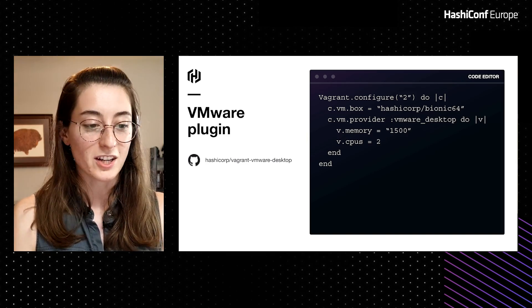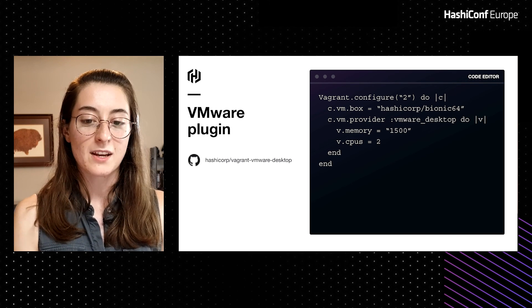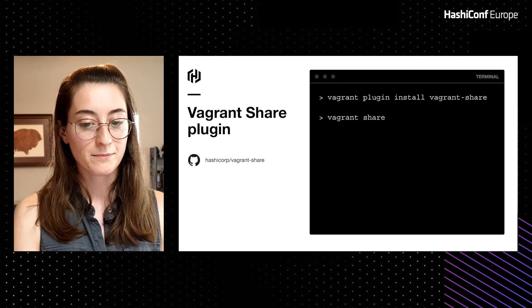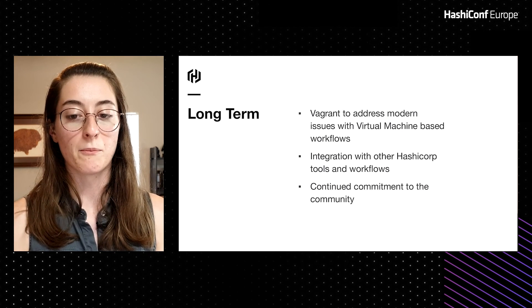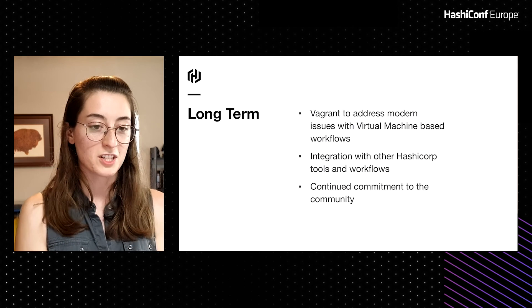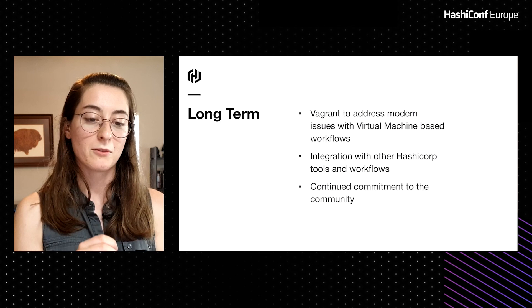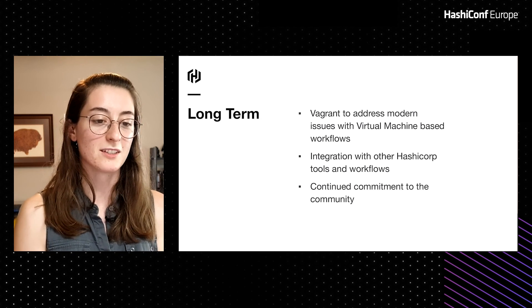In a slightly adjacent topic, the VMware plugin is being open-sourced. It will be available on GitHub at hashicorp/vagrant-vmware-desktop. Similarly, Vagrant Share is also getting open-sourced at hashicorp/vagrant-share. Long term, what we really want to do is address modern issues with virtual machine-based workflows using Vagrant, including integration with HashiCorp tools, and we have a continued commitment to the community. We hope you enjoyed this glimpse into the future of Vagrant. Please watch the HashiCorp blog for more detailed information including our timeline and the open-sourcing of plugins. Thanks very much for coming — enjoy the rest of HashiConf.